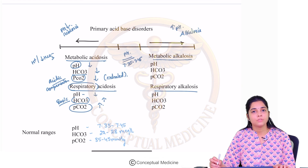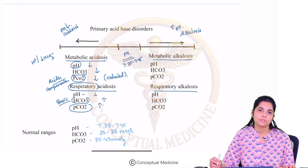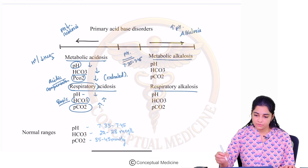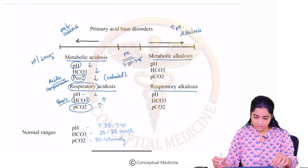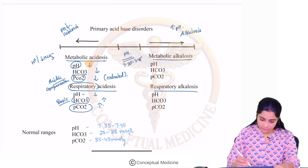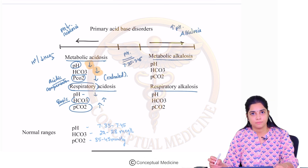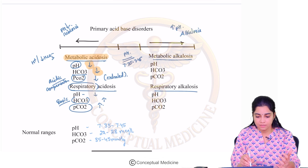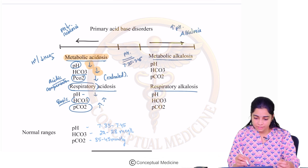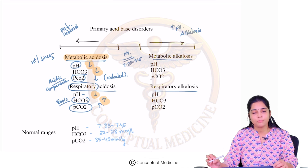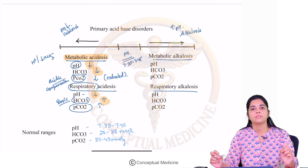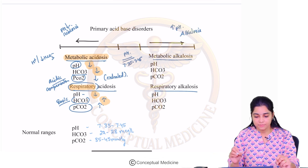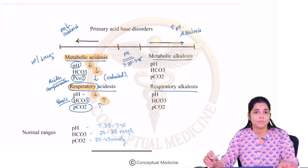Here is a way to differentiate metabolic from respiratory acidosis: if the pH and bicarb are moving in the same direction — both going downward — then it is a metabolic problem. If the pH and the bicarb are moving in opposite directions, then this is a respiratory issue.